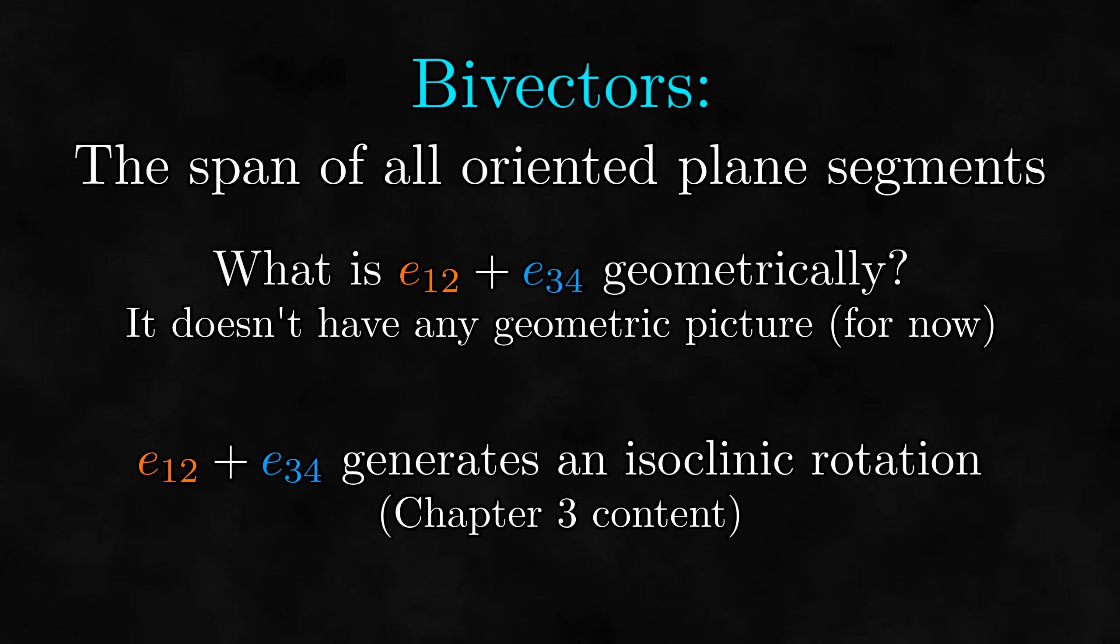But then what about the bivectors that are oriented plane segments? They're more special than the bivectors that aren't, so we should come up with terminology to describe them. Well, oriented plane segments are flat objects, while general bivectors are not necessarily flat like this.